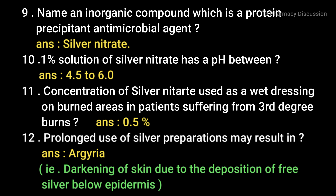A 1% solution of silver nitrate has a pH between 4.5 to 6. The concentration of silver nitrate used as a wet dressing on burnt areas in patients suffering from third-degree burns is 0.5%. Prolonged use of silver preparations may result in argyria — that is the darkening of skin due to deposition of free silver below the dermis.